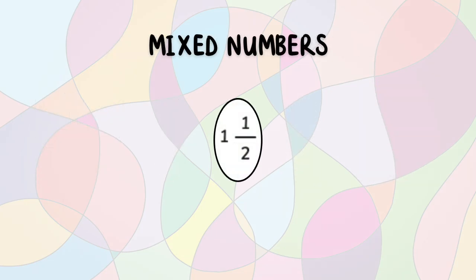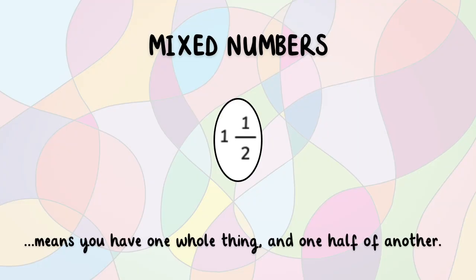You might also see mixed numbers like one and a half. That means you have one whole thing and one half of another.